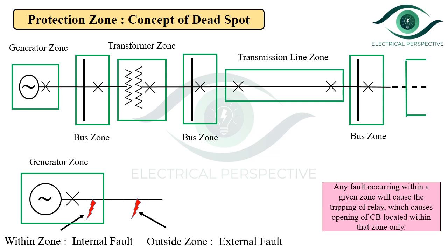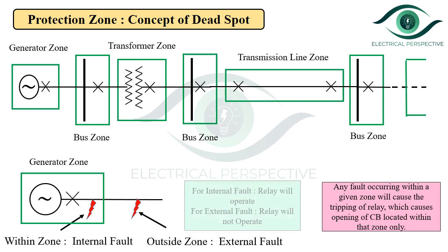The significance of the protection zone is that if the fault occurs within the zone, then only the relay will trip and the circuit breaker will operate. This means the protection system will respond only for the internal fault. In short, for an internal fault the relay will operate; for an external fault, the relay will not operate.